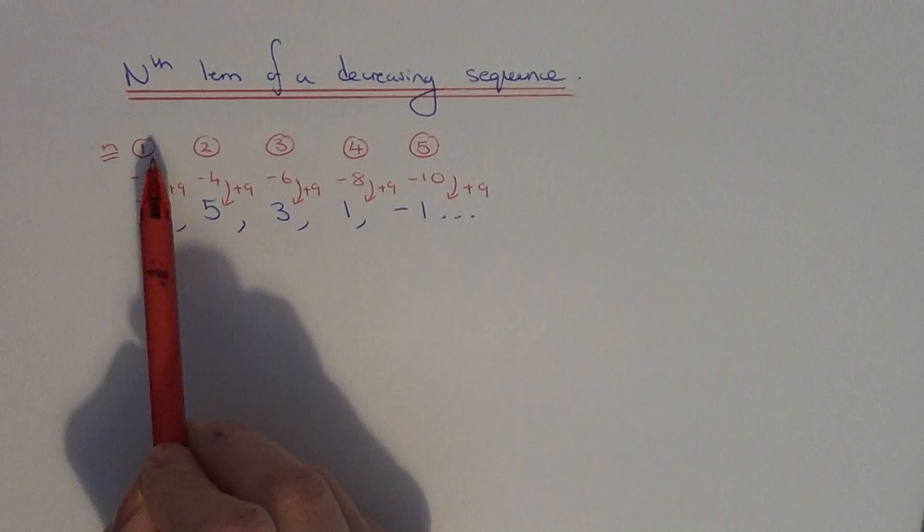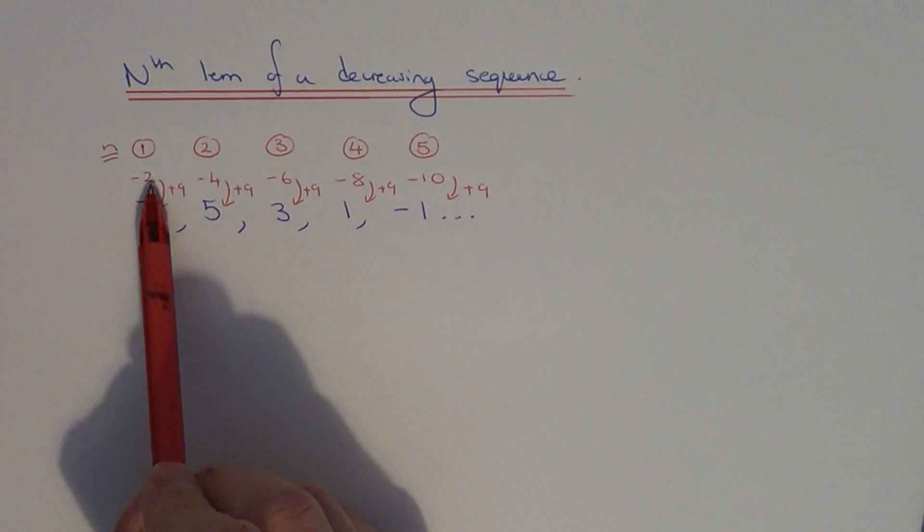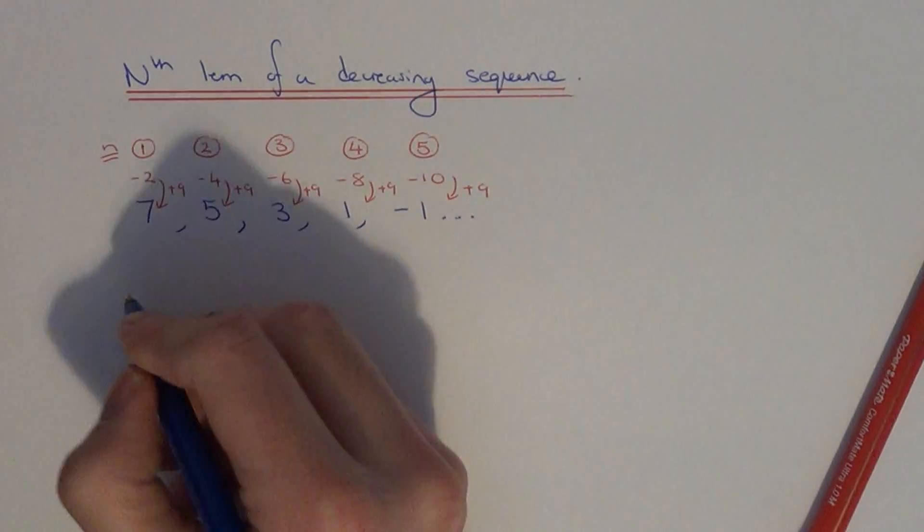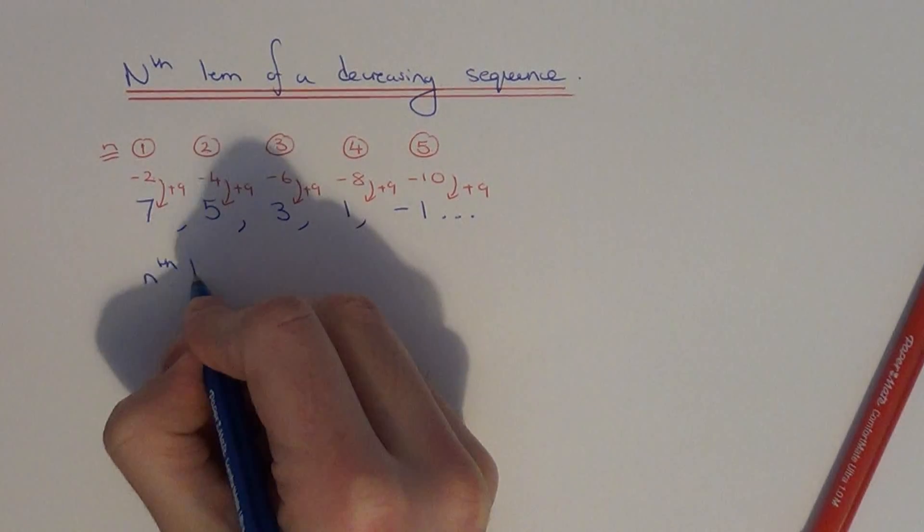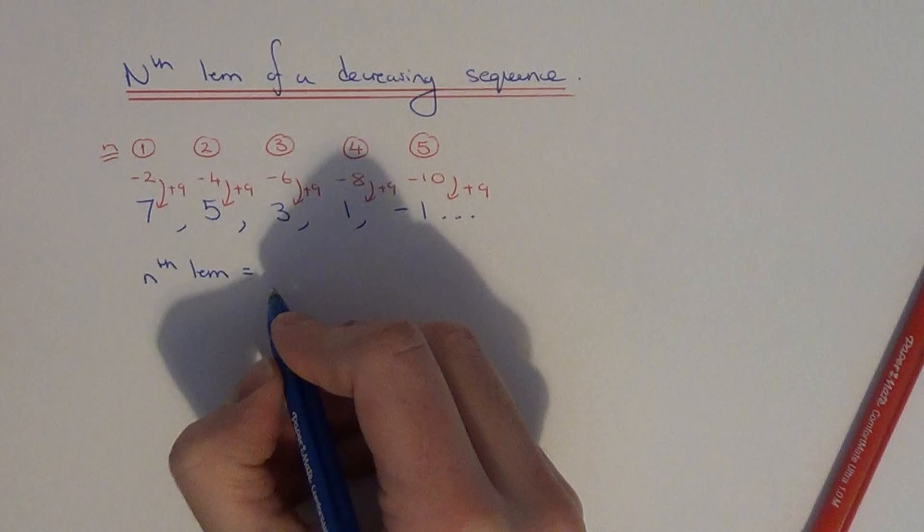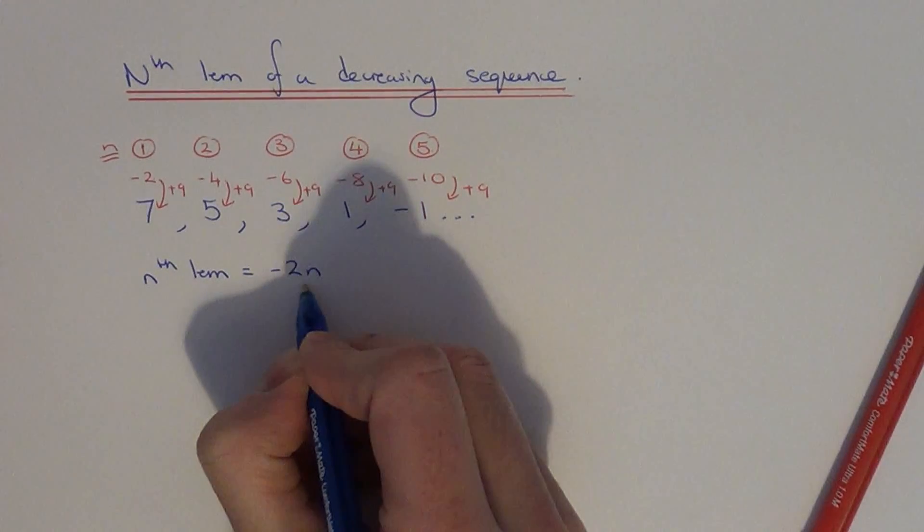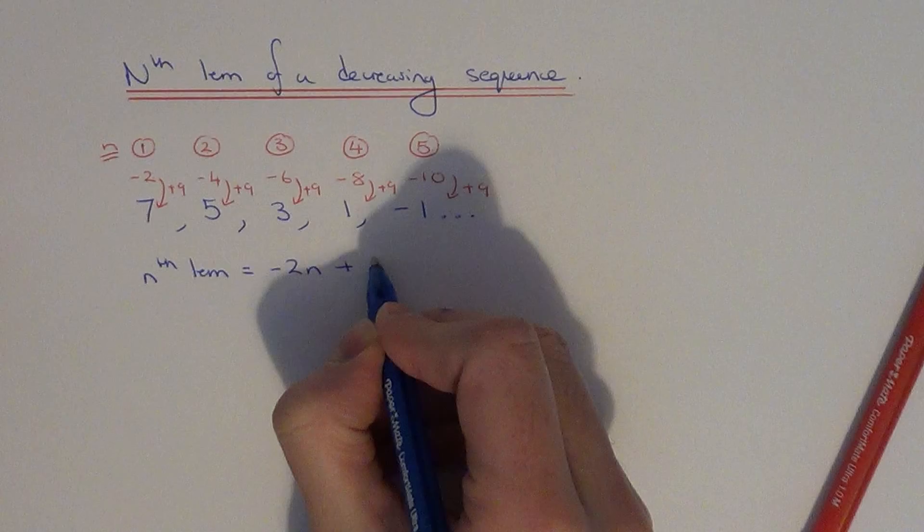So all we need to do then is multiply the numbers at the top by minus 2 and then add on 9. And that will take us to the number in the sequence. So in algebra we can write this down as minus 2n, because we times the numbers at the top by minus 2, and then plus 9.